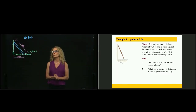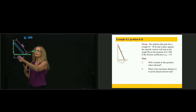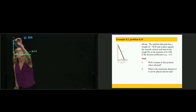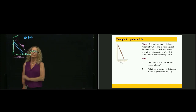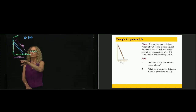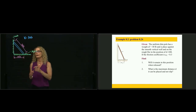This is example number 8.2. We are analyzing the impending motion or the possible motion of this bar with respect to this wall and floor. We have a smooth wall and a rough floor which has a static friction coefficient of 0.3. They are asking us if, with this here being 10 feet, that bar moves.